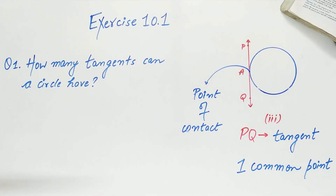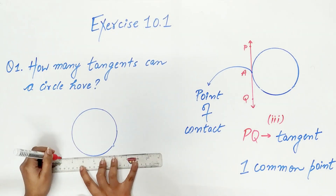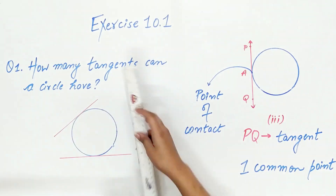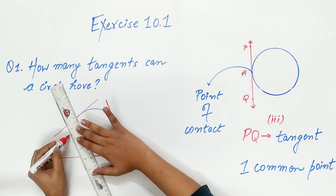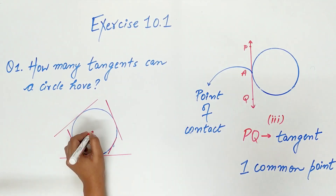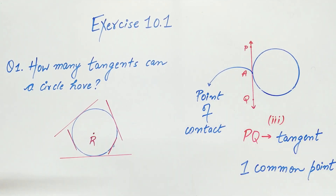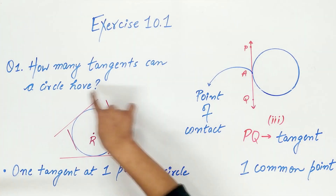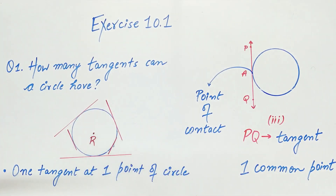Question one says: how many tangents can a circle have? We know there is only one tangent at a point of the circle, and a circle has an infinite number of points. Therefore, a circle has an infinite number of tangents.